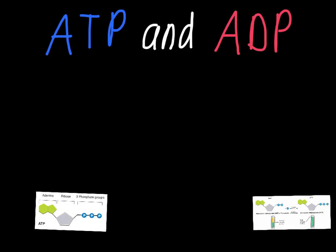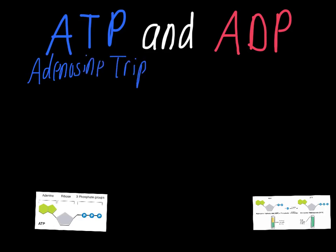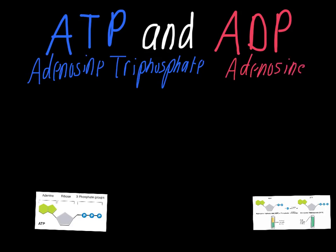This video is about the differences between the two molecules, ATP and ADP. ATP stands for adenosine triphosphate — adenosine, A-D-E-N-O-S-I-N-E, and then triphosphate. ADP, as you can probably guess, stands for adenosine diphosphate.